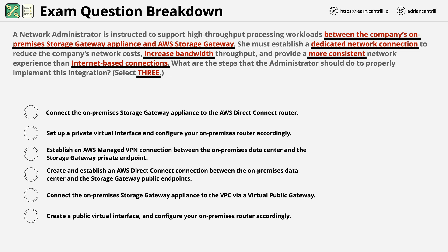Why don't you go ahead and try to identify any keywords in the answers. Pause the video and resume once you're ready. In the answers, I'm looking for things related to Storage Gateway or Direct Connect. I see: Direct Connect router on the first line, private virtual interface on the second, VPN connection and private endpoint on the third, Direct Connect and public endpoint on the fourth, VPC and virtual public gateway on the fifth, and public virtual interface on the sixth.